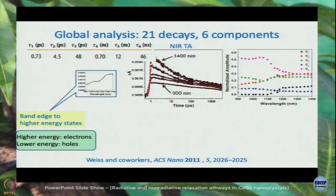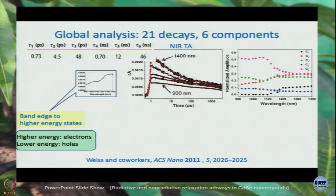What they did was a global analysis — though not fully global, because they fixed the lifetimes. They fixed them because there was already a very good match between PL and transient absorption data for five of the time constants, and the 0.73 picosecond time constant was well resolved. This is one step that can be questioned. After doing this constrained global analysis, they obtained six components and then worked with the amplitudes.